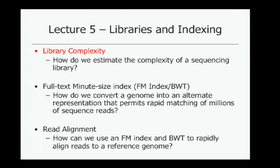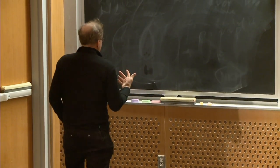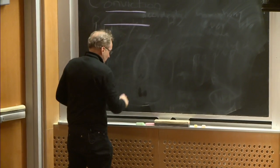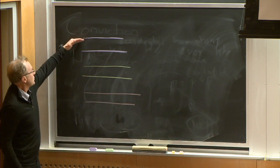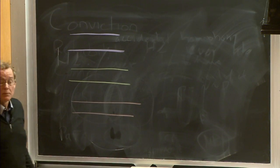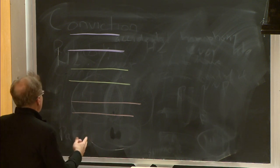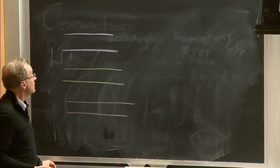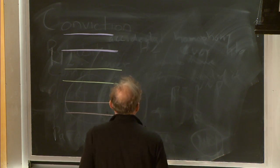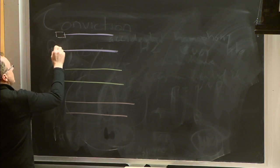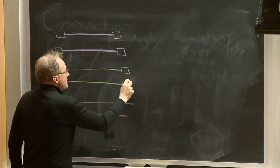Let's start with what a sequencing library is. Say that you have a DNA sample — we'll assume we have a bunch of different DNA molecules, illustrated in different colors. Some molecules are duplicated because typically we're preparing DNA from an experiment with many cells, or the DNA could be amplified using PCR or some other technique. To make a library, we process the collection and put sequencing adapters on — short DNA sequences at the ends of the molecules that permit sequencing.